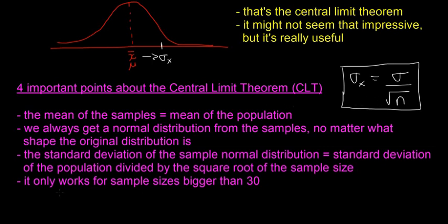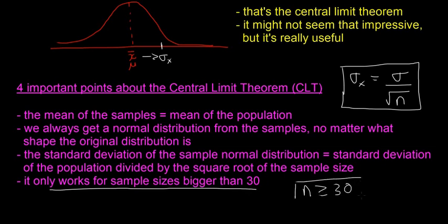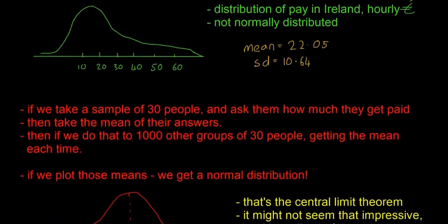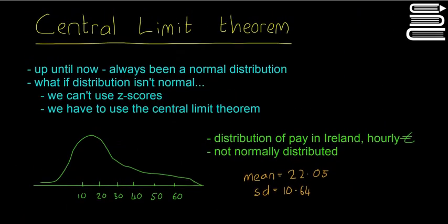The last important point about the central limit theorem is that it only works for sample sizes of 30 or bigger — n is greater than or equal to 30. As long as there are 30 people in your sample and you take loads of those samples, it'll work. If you have less than 30, the central limit theorem won't work as well. So that is the basics of the central limit theorem.